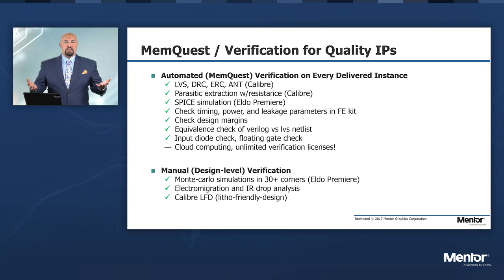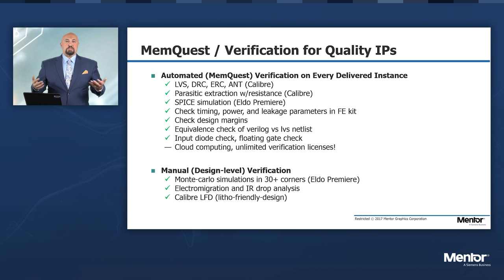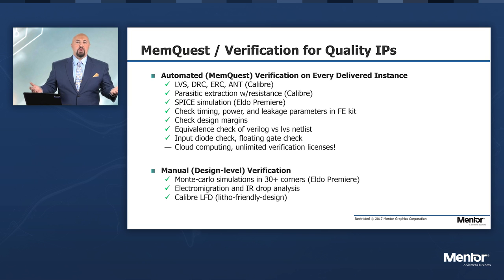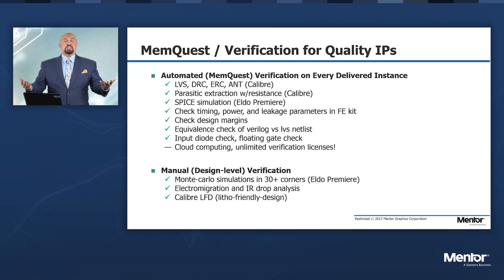In order to provide the best IP quality, we put in a variety of checks. We make sure that IPs are Caliber-approved with all aspects of LVS, DRC, ERC, and antenna effect. We make sure that parasitics including resistance are covered with Caliber for extraction. We make sure IPs are all verified at the transistor level for best quality using Eldo Premier. We provide timing information upfront with front end, and further with transistor-level accuracy with GDS2 for back end.